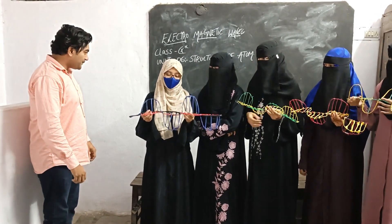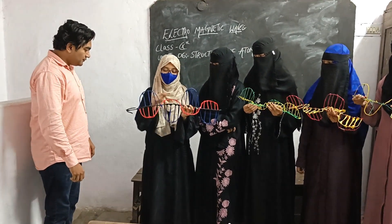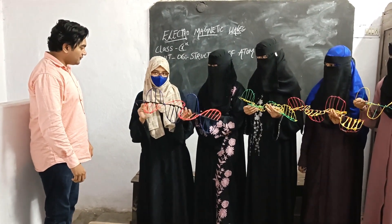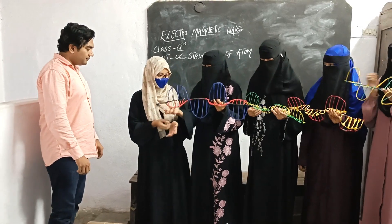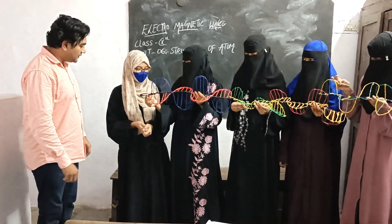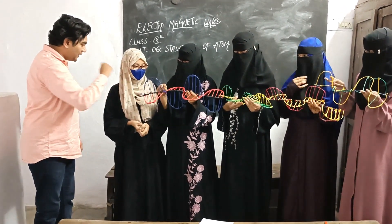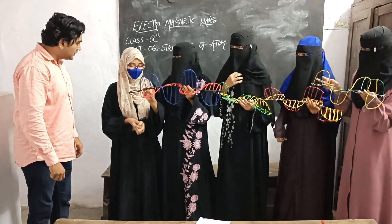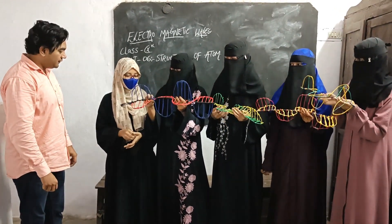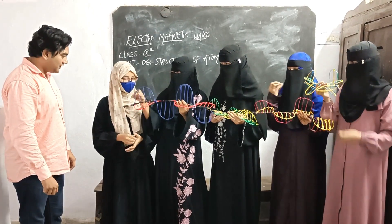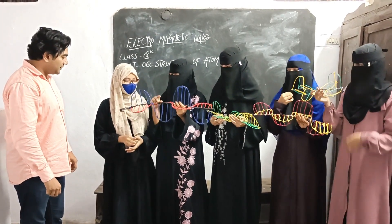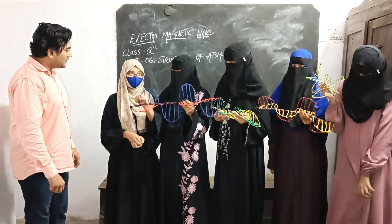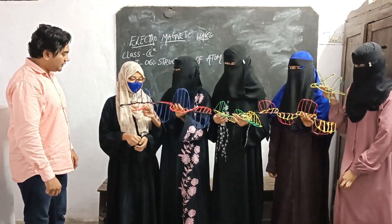Electromagnetic waves have 3 axes: X axis, Y axis, and Z axis. The first axis is the X axis, which is also known as the propagation of wave. This is the Y axis, which is also known as the electric wave. And the Z axis is also known as the magnetic wave.